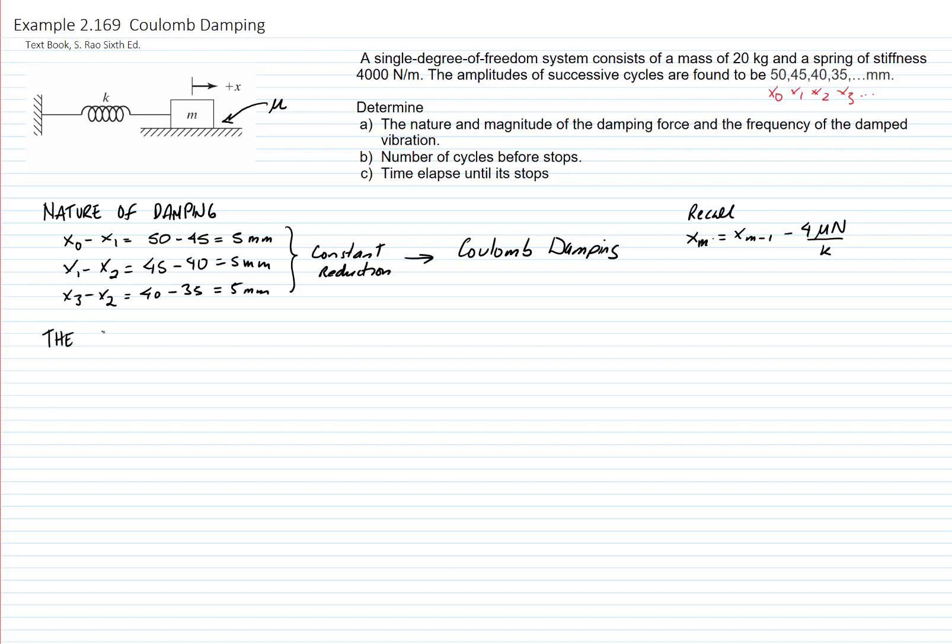Since we know that this is a coulomb damping system or a system that is subjected to dry friction, the system vibrates at its natural frequency. The natural frequency is defined as the square root of the constant of the spring divided by the mass, which is equal to square root of 4,000 divided by 20, which gives me a natural frequency of 14.1421 radians per second.